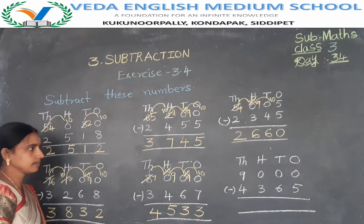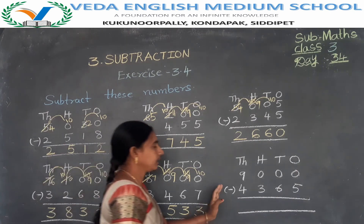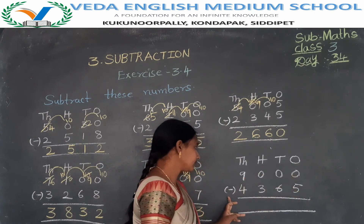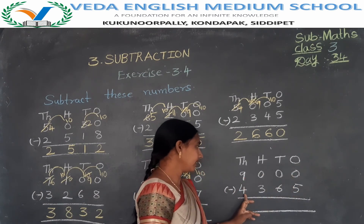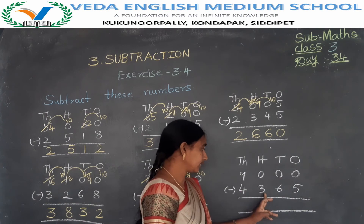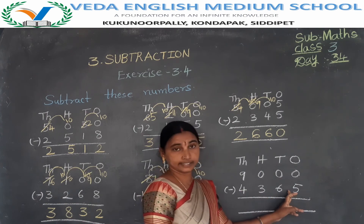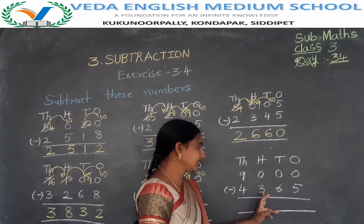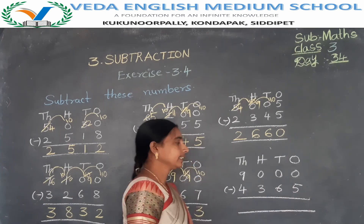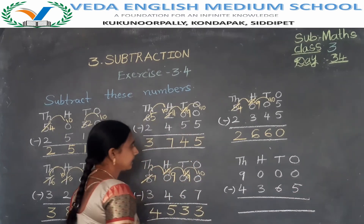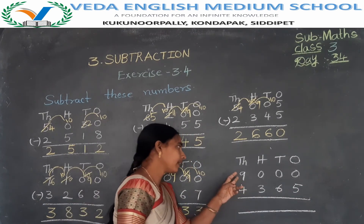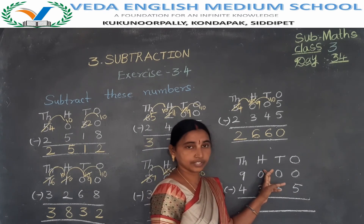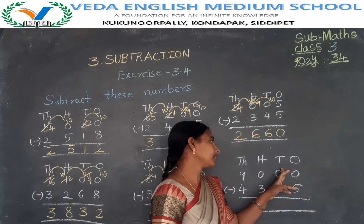Next problem: 9000 minus 4365. First borrow from the thousands place to the hundreds place, then borrow from the hundreds place to the tens place, then from the tens place to the ones place.